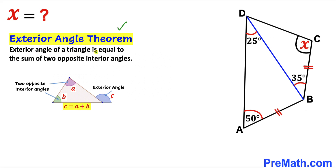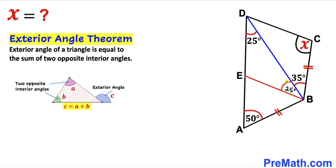According to the exterior angle theorem, the exterior angle of a triangle equals the sum of the two opposite interior angles — angle C equals A plus B. So we place a point E on side AD and connect it to vertex B, such that angle EBD equals angle EDB. This angle is our exterior angle, equal to the sum of the two opposite interior angles.